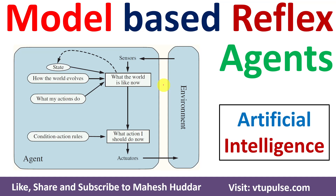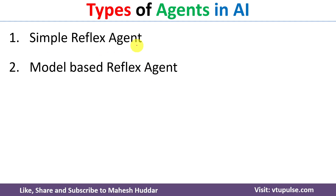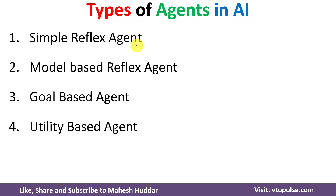Welcome back. In this video I will discuss model-based reflex agents in artificial intelligence with the help of a simple example. There are mainly four types of agents in artificial intelligence: the first is simple reflex agent, the second is model-based reflex agent, the third is goal-based, and the fourth is utility-based agent.